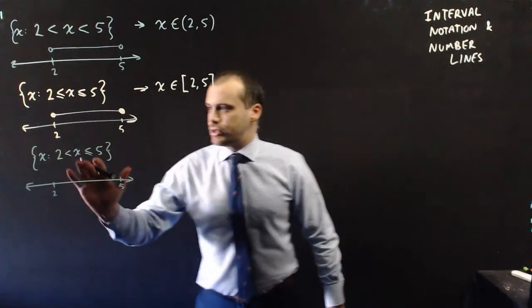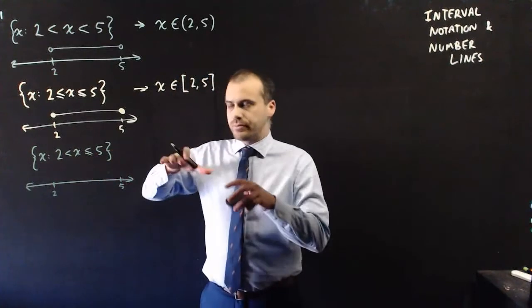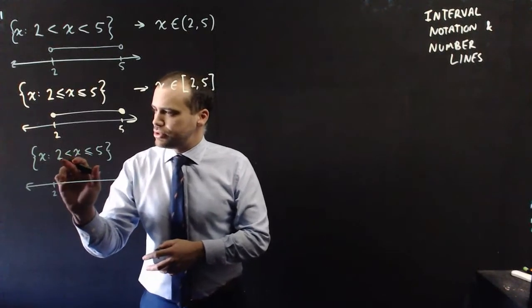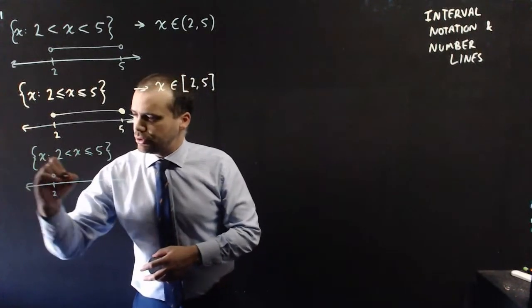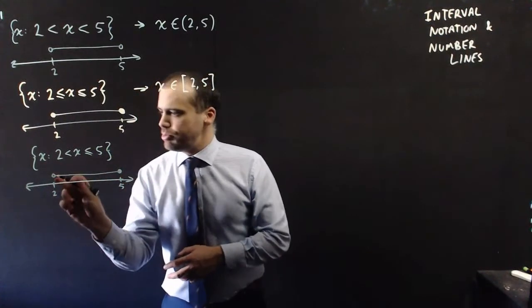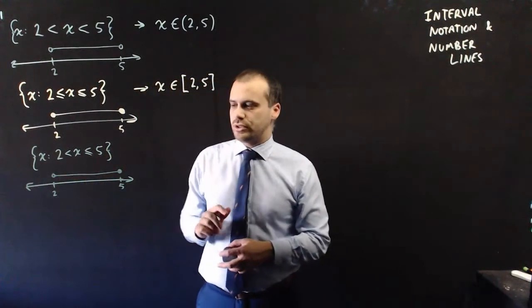Now it's not hard to see that you can use these in combination. So this says that x is greater than 2, so 2 is not included, but 5 is included. So we're going to need one of those. So an open circle here and a closed circle here.